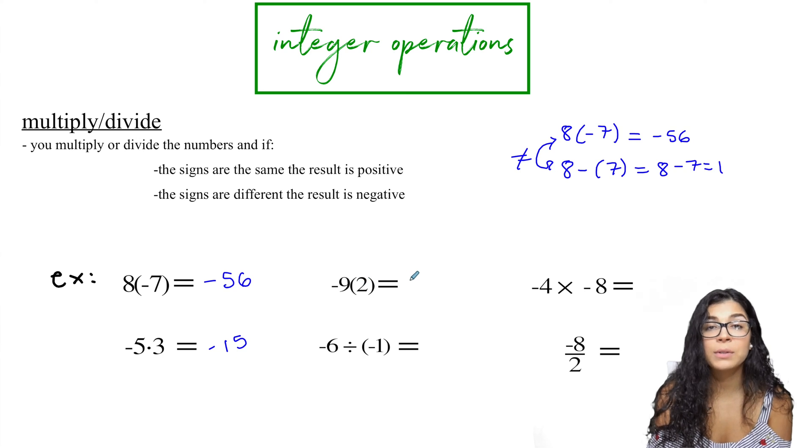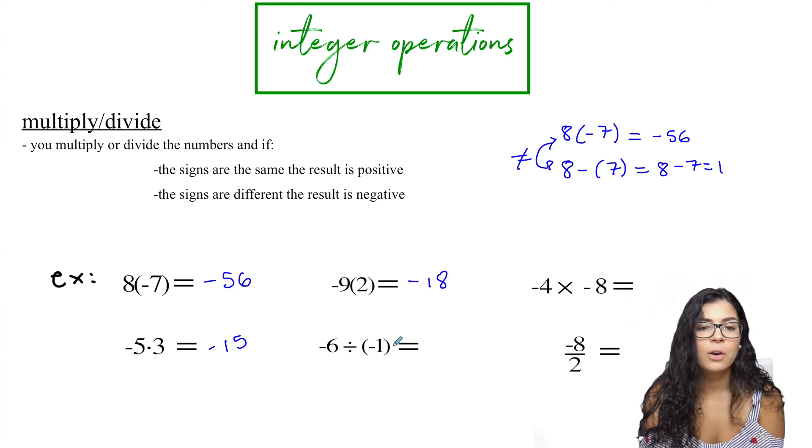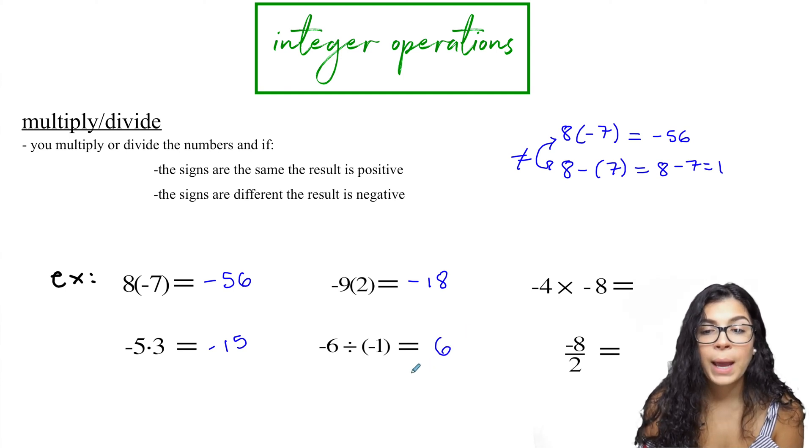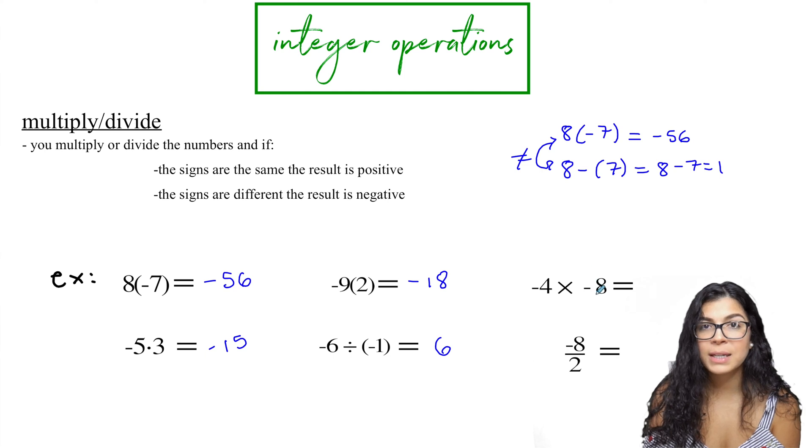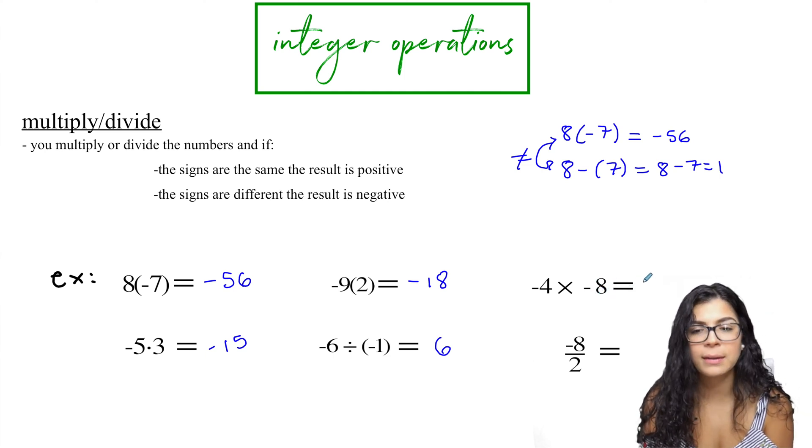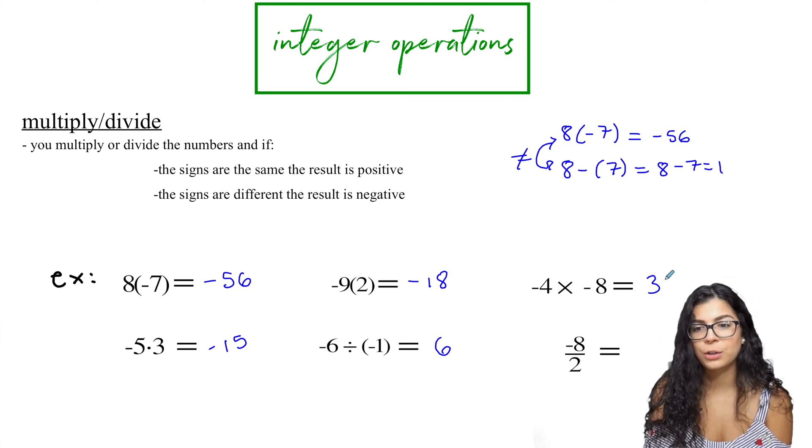Different signs here. My result will be negative and nine times two is 18. Then over here, same sign. So my answer will be positive. Six divided by one, six. Okay. Over here, negative times a negative, same sign. So I'll be having a positive as an answer. And then four times eight is 32.